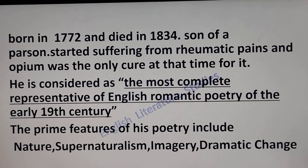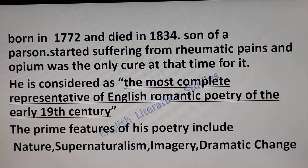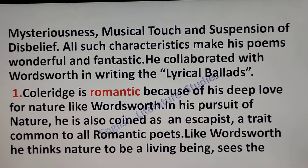Born in 1772 and died in 1834. He started suffering from rheumatic pains and opium was the only cure at that time. S.T. Coleridge is considered the most complete representative of English romantic poetry of the early 19th century. The prime features of his poetry include love for nature, supernaturalism, imagery, dramatic change, mysteriousness, musical touch, and suspension of disbelief. All such characteristics make his poems wonderful and fantastic.